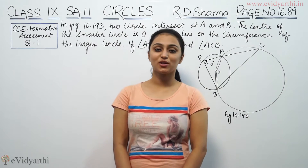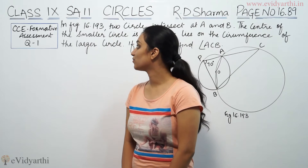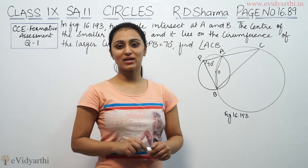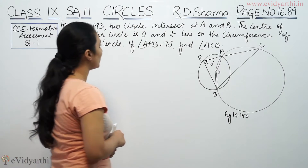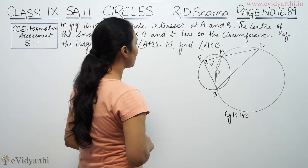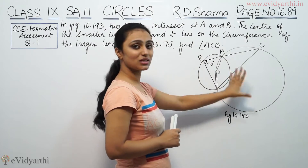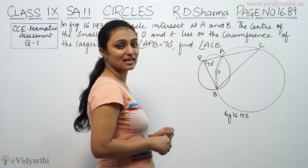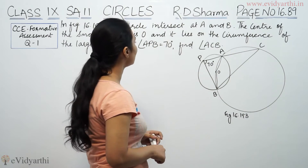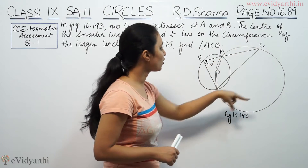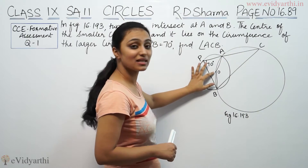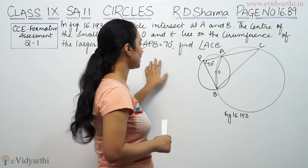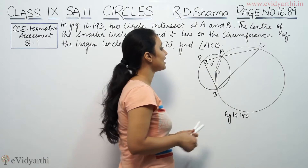Hi, this is Khushbu with another question on circles. This is question number 1 from CCE formative assessment of R.D. Sharma, page number 16.89. It says: in figure 16.193, two circles intersect at points A and B. The center of the smaller circle is O and it lies on the circumference of the bigger circle. The larger circle has angle APB equal to 70 degrees. Find angle ACB.